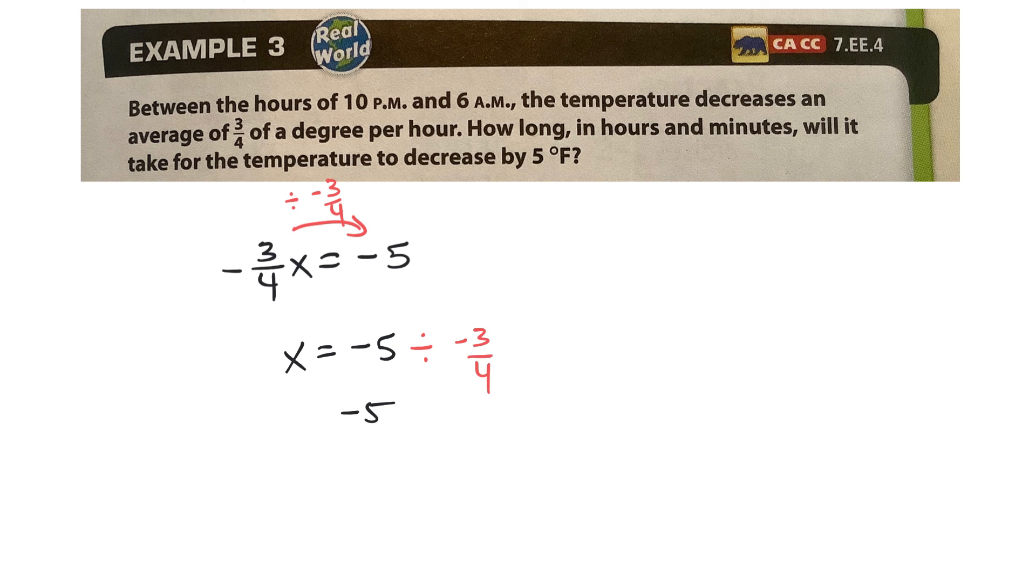So what that looks like is x is going to be equal to negative five divided by negative 3/4. And negative five is negative five over one. And I have to turn that division into multiplication. And when I do so, I have to flip the second fraction. Okay. Well, then, what I have now is, what, negative 20 over negative three. Negative divided by negative is positive, so it's 20 over three hours.